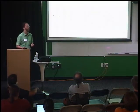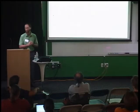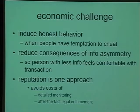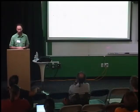The economic challenge for a reputation mechanism is we'd like to induce honest behavior among people when they have the temptation to cheat because they have some information that the other party of the transaction does not have. A good mechanism should help reduce the consequences of this information asymmetry so that people feel comfortable making a transaction even though they know they're lacking some information. Reputation is one way of going about this - it has advantages of avoiding the potentially expensive costs of detailed monitoring or, after the fact, legal enforcement. If you can prevent the problem in the first place, it's a lot better than trying to fix it afterwards.